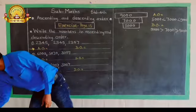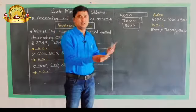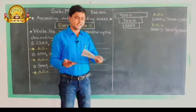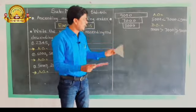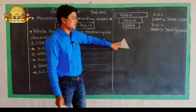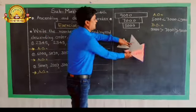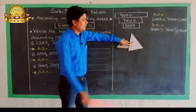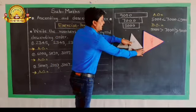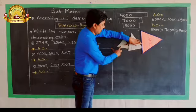Now I am going to take some shapes of triangles. When we take these shapes, we take the smaller one first. Ascending order means the smallest triangle is first, then the bigger one, and the biggest one is last. So this arrangement of triangles shows the ascending order.